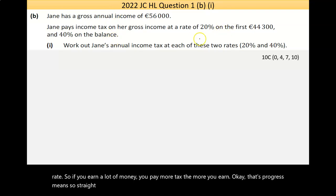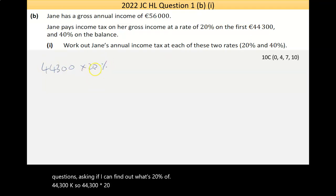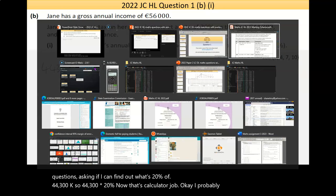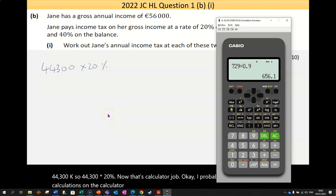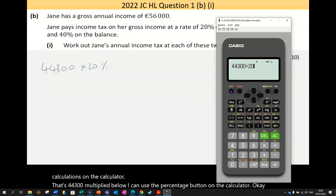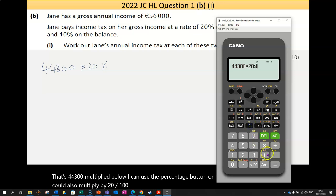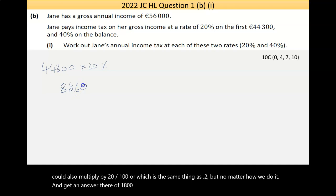Straight away I can do a calculation even without reading what the question is asking. If I can find out what's 20% of 44,300. So 44,300 multiplied by 20%. That's a calculator job. I could use the percentage button on the calculator. I could also multiply by 20 over 100, which is the same thing as 0.2. But no matter how I do it, I can get an answer there of €8,860.